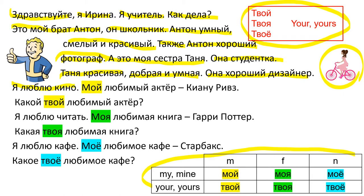Я люблю кино. Мой любимый актер Киану Ривз. Какой твой любимый актер? Я люблю читать. Моя любимая книга Гарри Поттер. Какая твоя любимая книга? Я люблю кафе. Моё любимое кафе — Starbucks. Какое твоё любимое кафе?